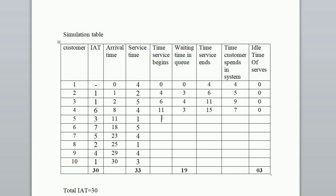For customer 5: arrival time is 11th minute, but the 4th customer ends service at 15th minute, so service begins at 15th minute. Waiting time is 15 minus 11 equals 4 minutes. Service time is 1 minute, so time service ends at 15 plus 1 equals 16th minute. Time customer spends in system is 4 plus 1 equals 5 minutes. Idle time of server is 0.